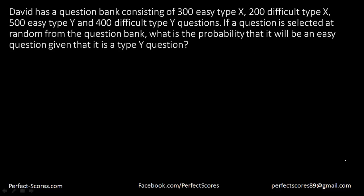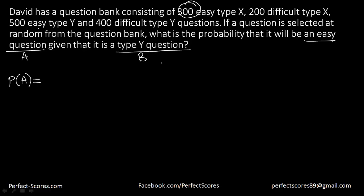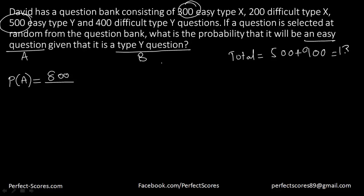David has a question bank consisting of 300 easy type X questions, 200 difficult type X questions, 500 easy type Y, and 400 difficult type Y questions. A question is selected at random. What is the probability that it will be an easy question — event A — given that it is a type Y question — event B? The total easy questions are 300 + 500 = 800. The total questions are 300 + 200 + 500 + 400 = 1,300. So P(A) = 800/1,300 = 8/13.